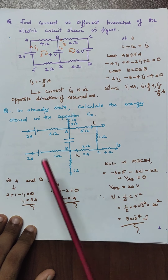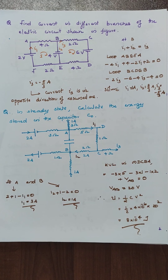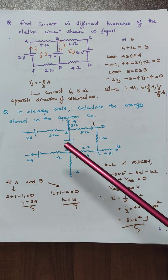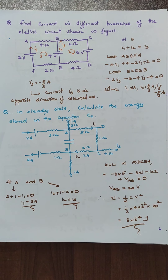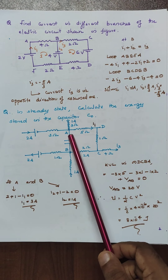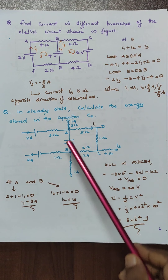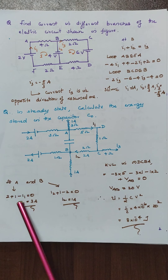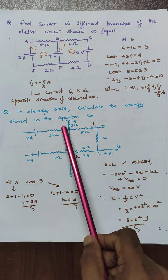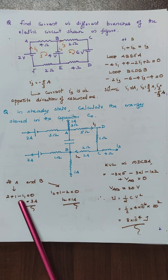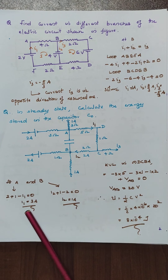In steady state, calculate the energy stored in the capacitor C0. In the steady state, the capacitor arm has no current flowing through it — that is a very important concept. By using the circuit elements, we can apply the junction rule at points A and B. At point A, we get 2 plus 1 plus 2 plus 1 minus I1 equal to 0. So I1 equals 3 A.